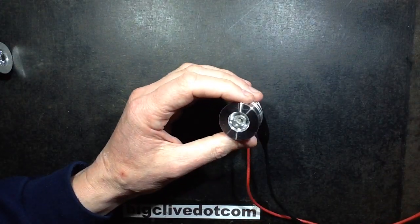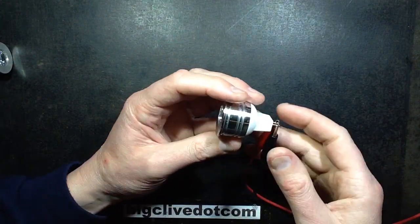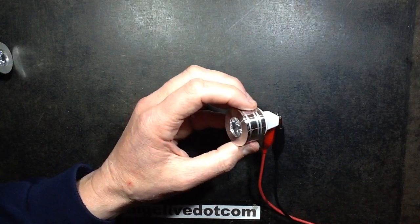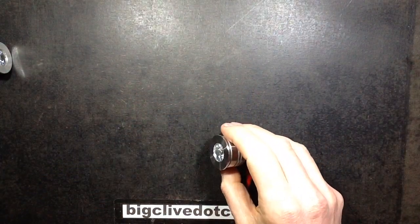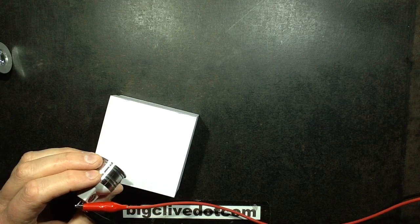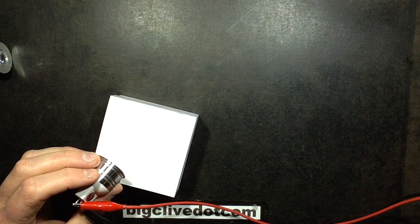This thing barely starts glowing at 2.83 volts. It is bi-directional. It's got a rectifier in it. I'll bring a bit of card in so I can point it at it. As you step the voltage up, it starts getting brighter and keeps getting brighter.